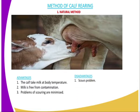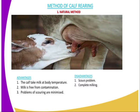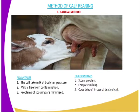What are the disadvantages? Number one, the scouring problem: in case the calf suckles excess milk, it will suffer from scouring disease. Number two, complete milking makes that there is inadequate milk for the calf left in the mammary gland.